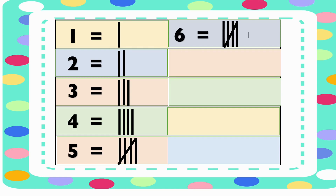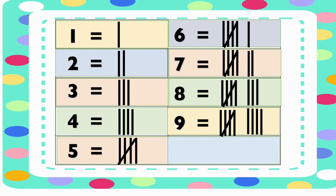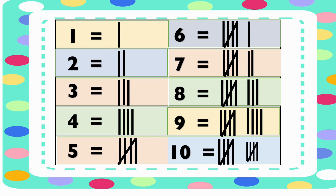Number six is represented by one group of five and one straight line. Number seven is represented by one group of five and two straight lines. Number eight is represented by one group of five and three straight lines. Number nine is represented by one group of five and four straight lines. Number ten is represented by two groups of five.